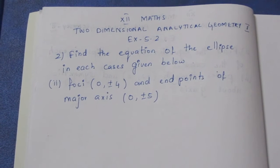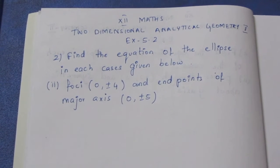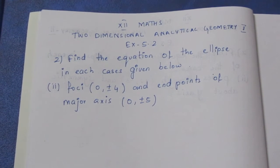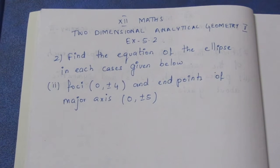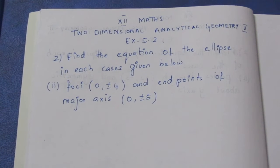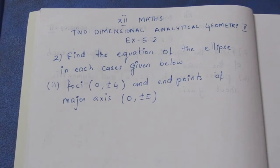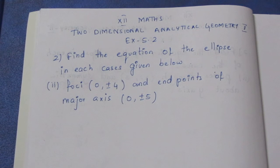Hello. In 12th standard 2-dimensional analytical geometry, Exercise 5.2, we are going to look at the second sum in this video. Question: Find the equation of the ellipse in each case given.